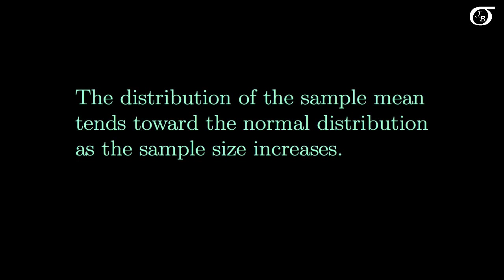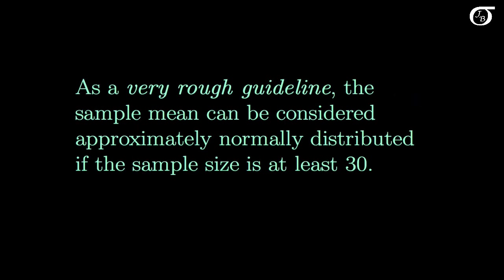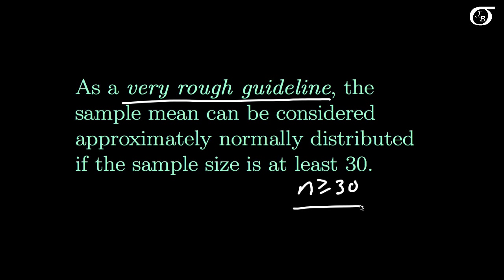What I was illustrating is that when sampling from non-normal populations, the distribution of the sample mean tends toward the normal distribution as the sample size increases. As a very rough guideline, the sample mean can be considered approximately normally distributed if the sample size is at least 30. This is a very rough guideline — we can construct scenarios where a sample size of 100 trillion is not nearly enough, but in most practical situations, when n gets beyond 30, the distribution of the sample mean will be approximately normal.